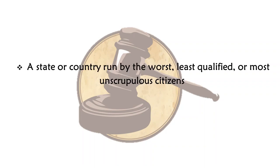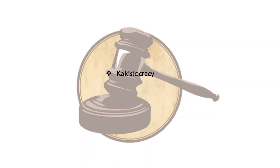A state or country run by the worst, least qualified or most unscrupulous citizens — what would that form of government be called? It would be called cacistocracy. Here the government is run by the least qualified and most unsuitable persons.